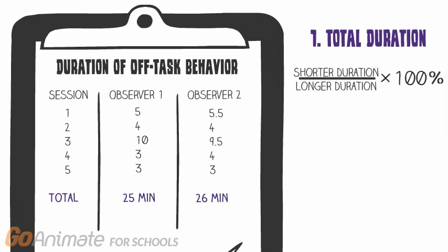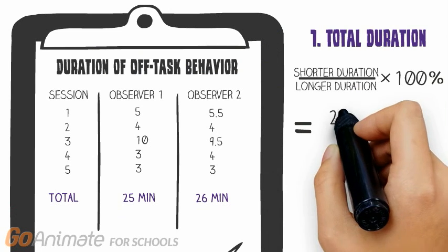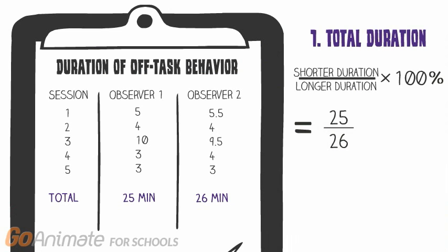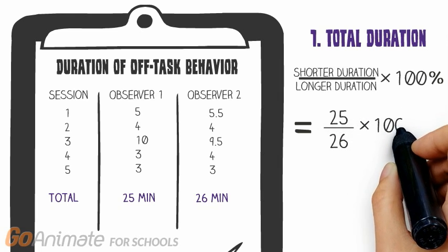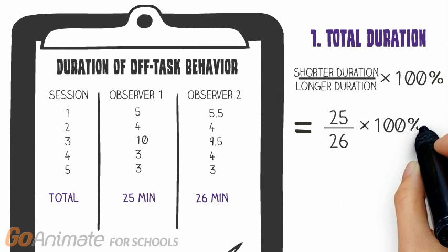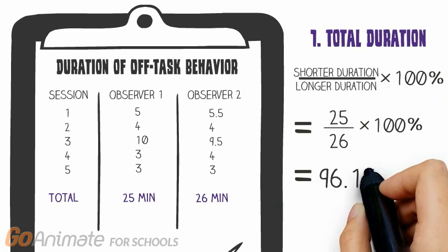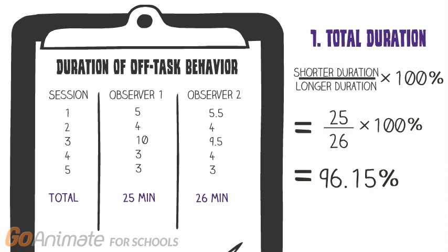Using our sample data, Observer 1 recorded 25 minutes of off-task behavior, and Observer 2 recorded 26. The shorter duration, 25, is divided by the longer, 26, multiplied by 100%, resulting in an IOA of 96.15%.